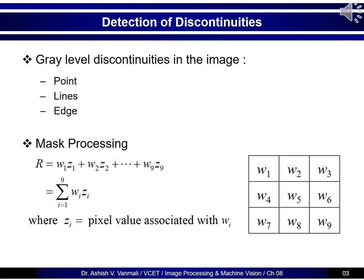Here you can see a 3x3 mask where the weights for different pixels are w1, w2, w3, and so on up to w9. The underneath pixels we consider as z1, z2, z3 up to z9. The result will be the weighted sum: w1·z1 plus w2·z2, and so on up to w9·z9. This result will then be tested against the threshold to make a decision.